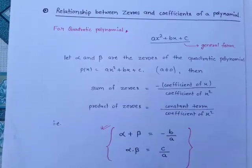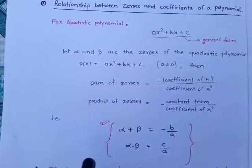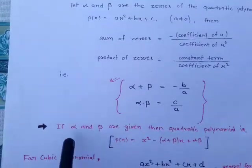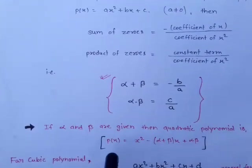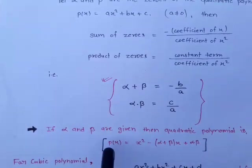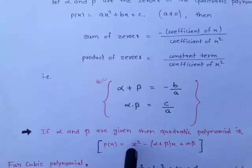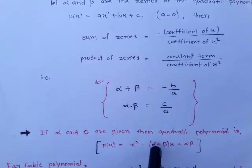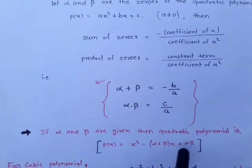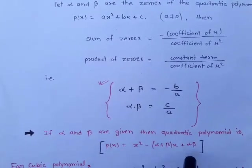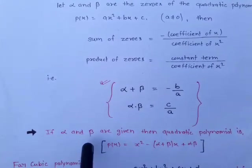Note: for quadratic polynomial formation if zeros are given — if alpha and beta are zeros of the quadratic polynomial, then the polynomial is p(x) = x² – (alpha + beta)x + alpha·beta. This is the pattern for forming a quadratic polynomial when zeros are given.